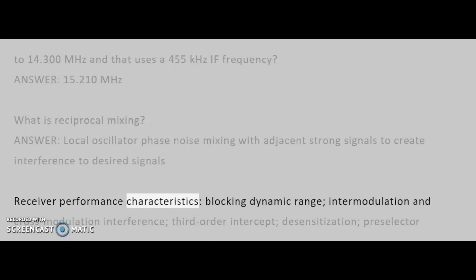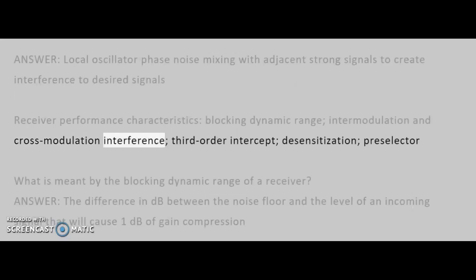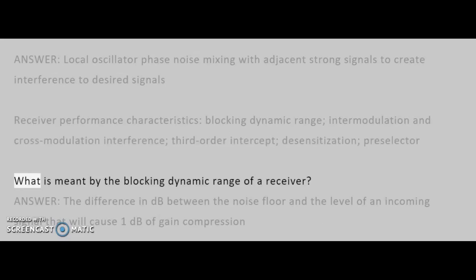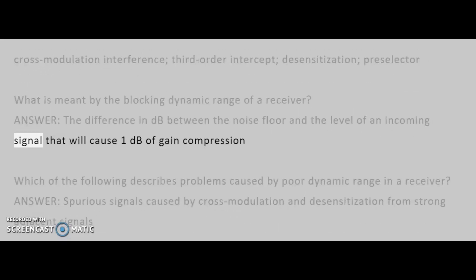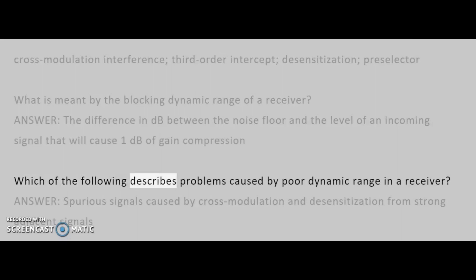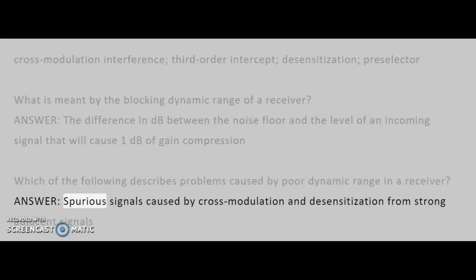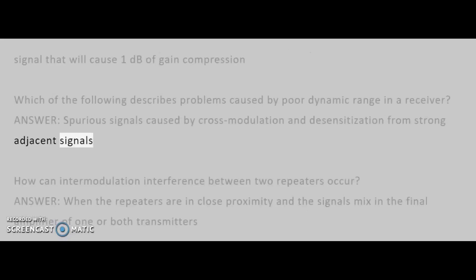Receiver performance characteristics include: blocking dynamic range, intermodulation and cross-modulation interference, third-order intercept, desensitization, and pre-selector. What is meant by the blocking dynamic range of a receiver? Answer: The difference in dB between the noise floor and the level of an incoming signal that will cause 1 dB of gain compression. Which of the following describes problems caused by poor dynamic range in a receiver? Answer: Spurious signals caused by cross-modulation and desensitization from strong adjacent signals.